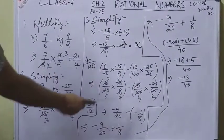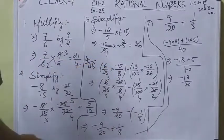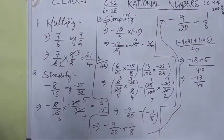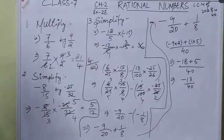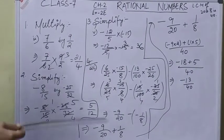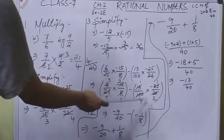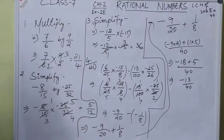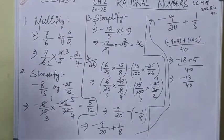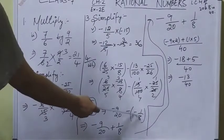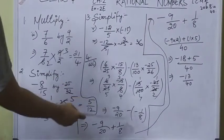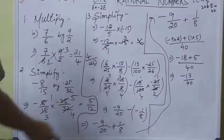Now we solve this within the brackets. 13 and 26 can be cancelled by 2, and 25 and 100 can be cancelled by 25 times 4. We get -1/8. When we remove this bracket, minus minus becomes plus.